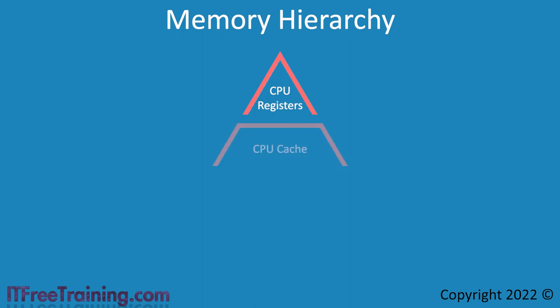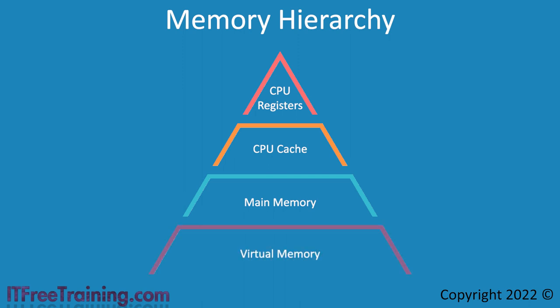At the next level is CPU cache. CPU cache is very fast, but there is not much of it. CPU cache is measured in megabytes and varies depending upon the CPU. If the data cannot be found in the CPU cache, the next step is to access the main memory of the computer. This is slower, but the advantage is that there is more of it. Lastly, there is virtual storage, usually stored on a device like a hard disk — slower again, but very cheap.